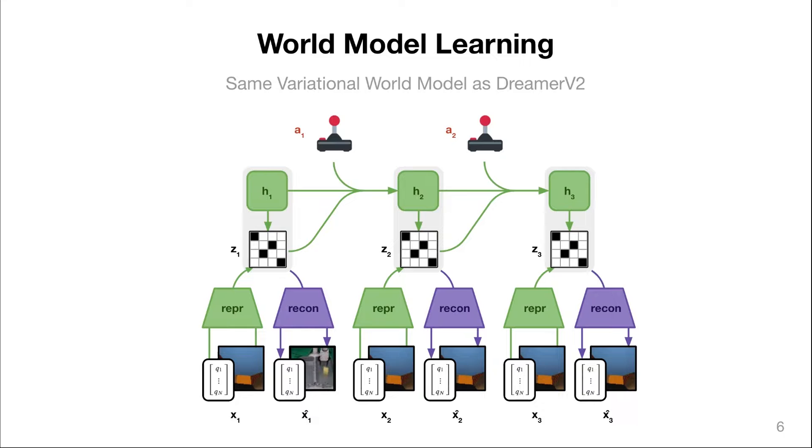The sensory inputs are encoded with a convolutional neural network into multiple discrete latent variables. The sequence of these latent variables is then predicted with a recurrent neural network that is also conditioned on the actions. And from the resulting recurrent neural network states and latent variables, we reconstruct the sensory inputs to obtain a strong learning signal. The whole model is optimized end-to-end using the variational lower bound so that the latent variables become easily predictable by the recurrent neural network while also remaining informative of the sensory inputs.